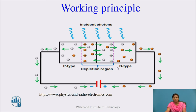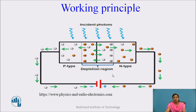The reverse current generated is used to drive a number of circuits. This reverse current depends upon the intensity of light — as light intensity increases, the reverse current also increases. This is the basic principle of the photodiode.